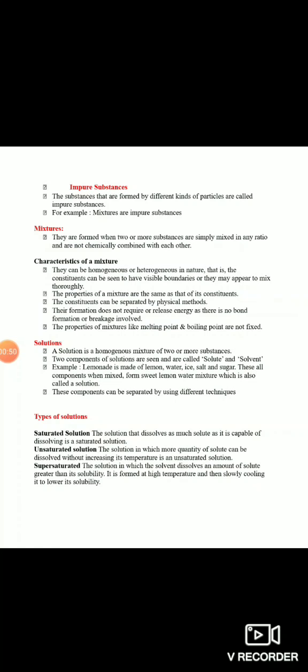Homogeneous mixture ka example - maan lo mere paas ek glass mein paani hai, maine usme ek chamach sugar add ki, achhe se stir kiya - ek mixture ban gaya water aur sugar ka. Agar aap us mixture ko dhyan se dekhein to aapko aisa nahi pata chalega ki yahan tak paani hai, yahan tak sugar hai - dono achhe se ek doosre ke saath combine ho gaye honge - to woh kaun sa mixture hua - homogeneous mixture. Heterogeneous mixture - ek glass paani lein, usme chalk ka powder daalein, stir karein aur chhod dein - aap dekhenge ki upar wale portion mein paani hai aur jo chalk tha woh saara neeche settle ho jaata hai - woh mixture heterogeneous mixture hota hai.